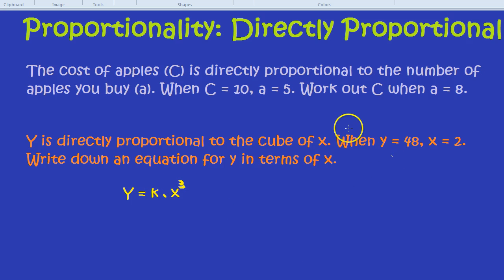Now we put the numbers in. When Y equals 48, X equals 2. 48 is Y equals K multiplied by 2 cubed, because X is 2. What's 2 cubed? 2 times 2 times 2, which is 8. 48 equals K times by 8, or 8K. Divide by 8 to both sides, and you get 6 equals K.